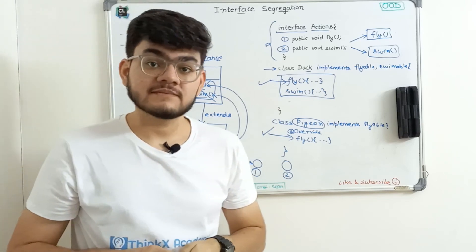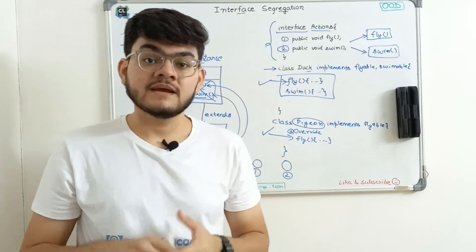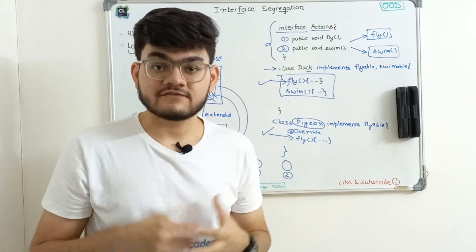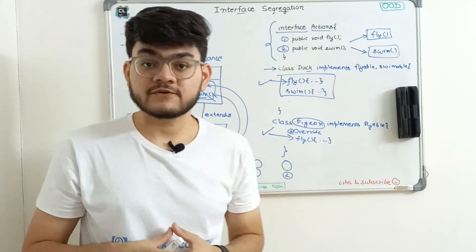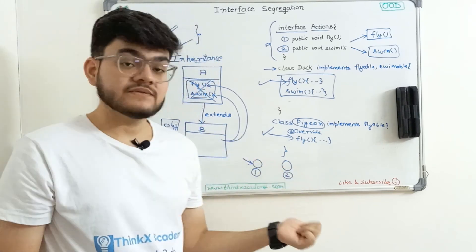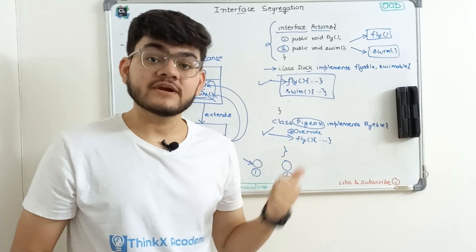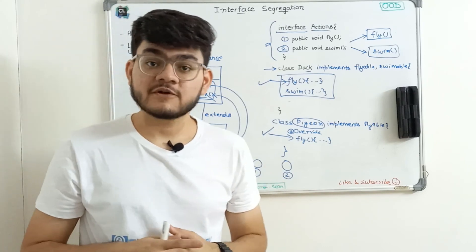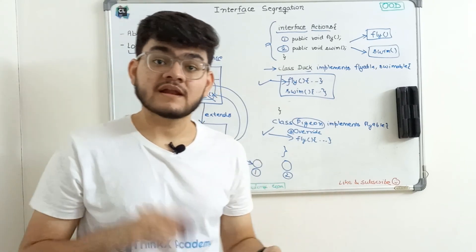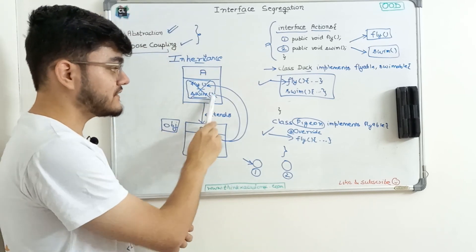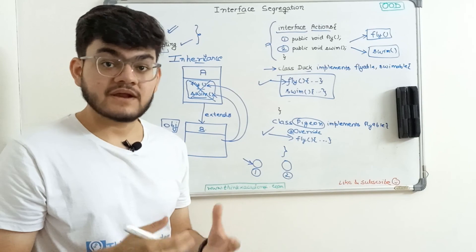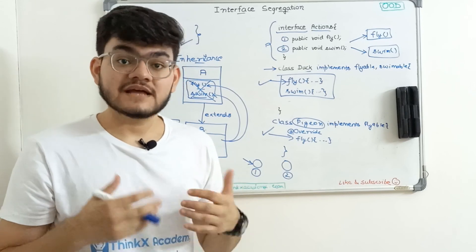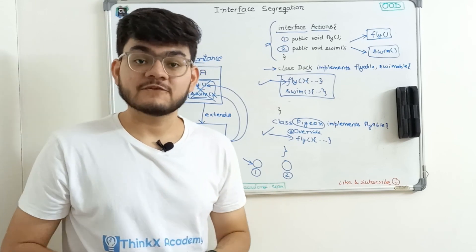Loose coupling and abstraction are two very important concepts. If you are not able to understand loose coupling in one go, watch this video one more time, draw out the examples yourself, and you will quickly understand everything. If you have questions, write them in the comments and make sure to like this video and subscribe to our channel. In the next video, we are going to cover the last SOLID principle — the dependency inversion principle. That's all for this tutorial. Thanks for watching.